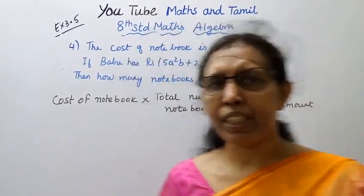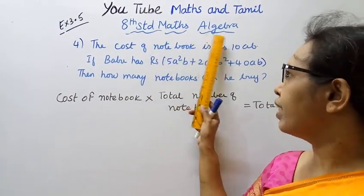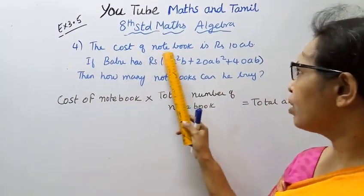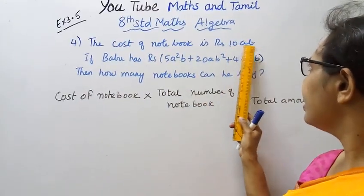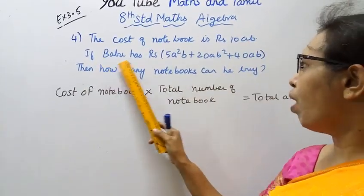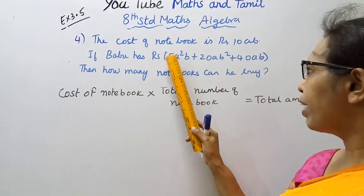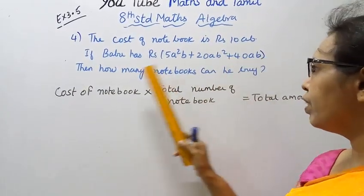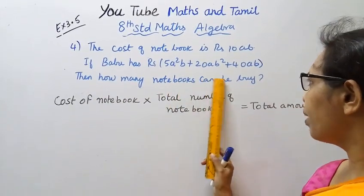Hello students, welcome to Max and Tamil channel. 8th Maths Algebra Exercise 3.5, problem 4. The cost of a notebook is Rs. 10ab. If Babu has Rs.(5a²b + 20ab² + 40ab), then how many notebooks can he buy?